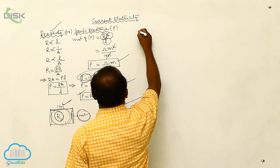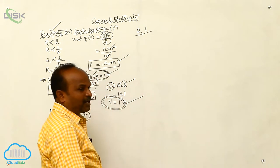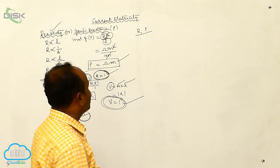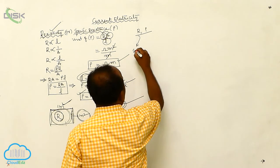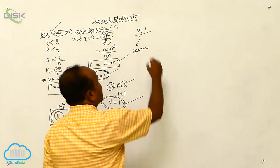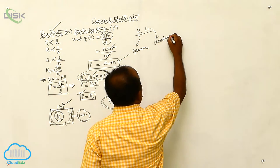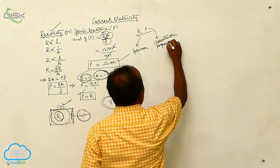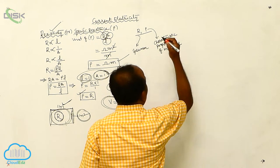What is the difference between resistance and resistivity? Resistance is the property of the specimen, whereas resistivity is the characteristic property of a material.